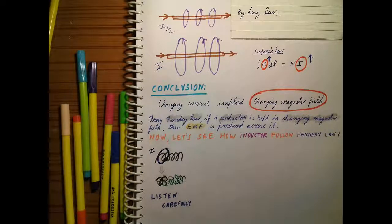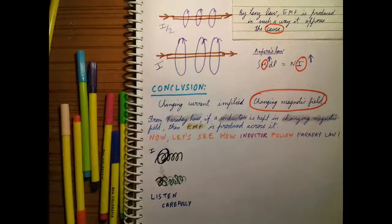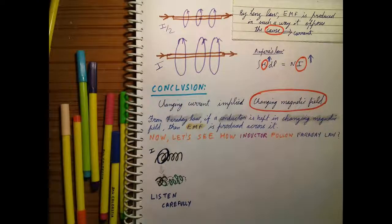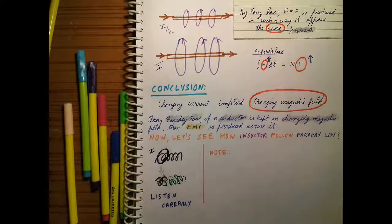By Lenz's law, the EMF is produced in such a way that it opposes the cause. Here the cause is the current, because we are getting a changing magnetic field due to this current. So the EMF will be produced in such a way that it opposes this current — the direction of the EMF will cause current to flow in the opposite direction.